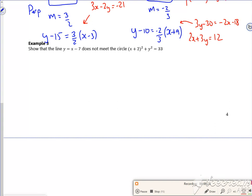Right, so show that the line y equals x plus seven does not meet the circle. So if you're looking for any form of intersection, you would always sub one equation into the other.